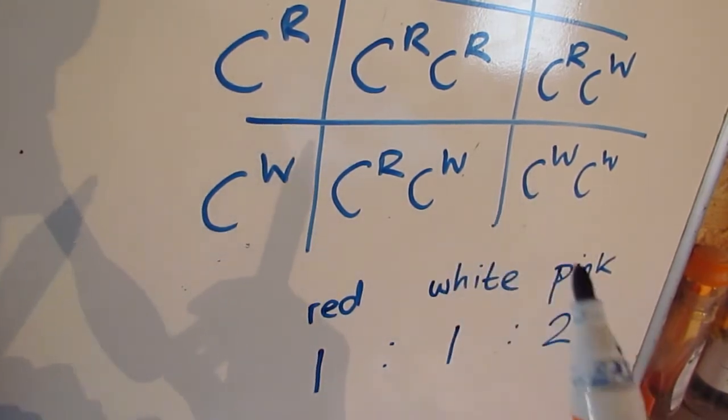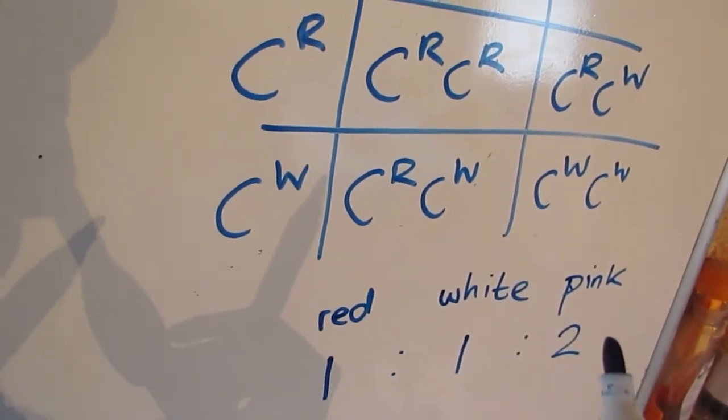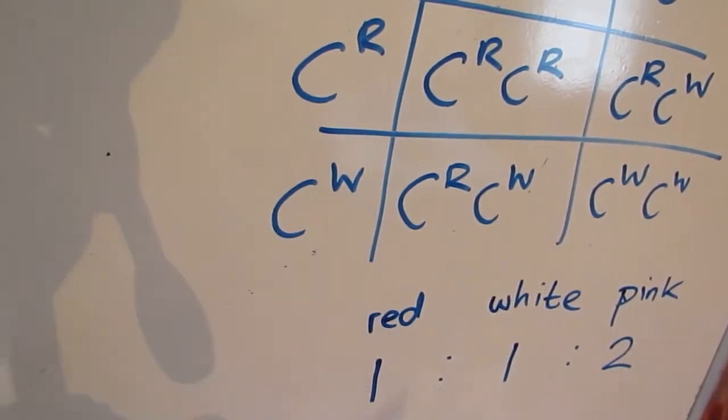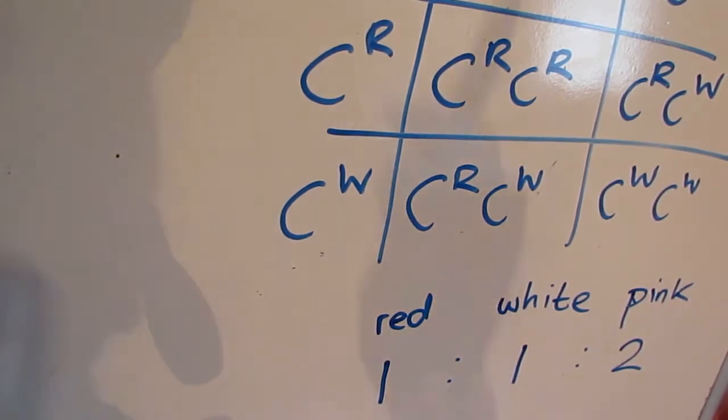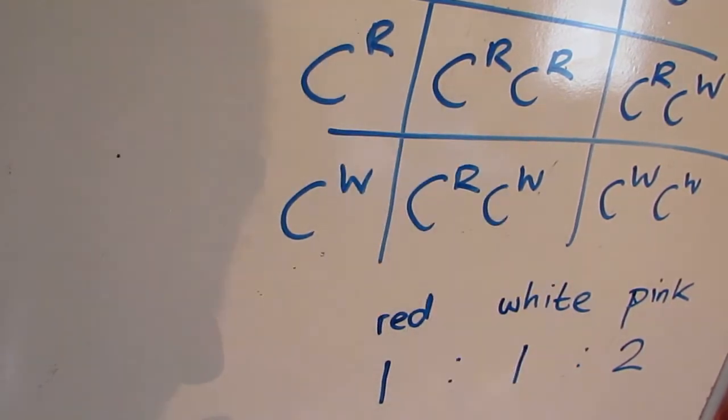What are the ratios? We should see one for red, one for white, and two for pink. So our ratio of red to pink to white would be one to two to one. Or red to white to pink being one to one to two. So that is a new ratio that you get as a result of having co-dominance.